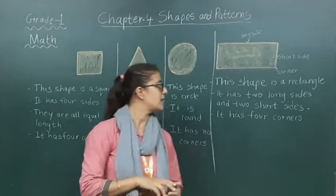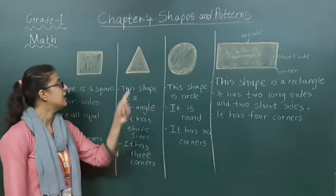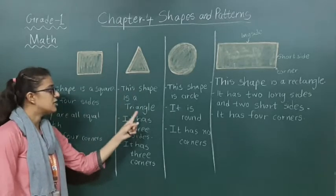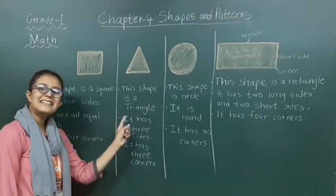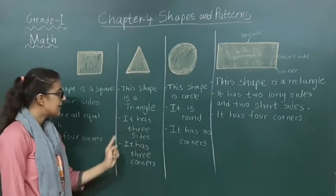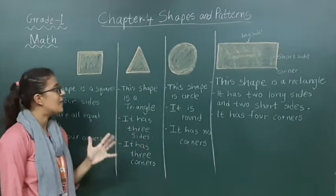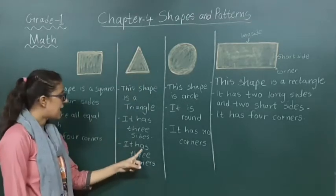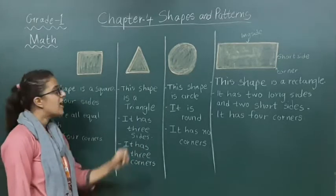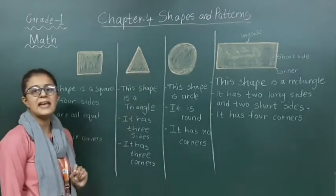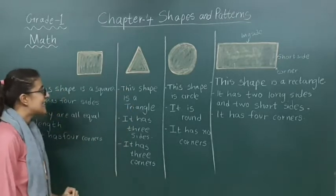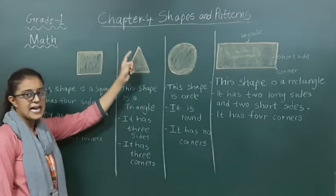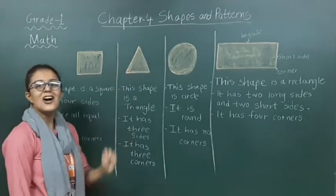Now let's move forward to the next shape, that is the triangle shape. This shape is a triangle. It has three sides. How many sides does a triangle have? Three sides. It has three corners. How many corners does a triangle have? Three corners.